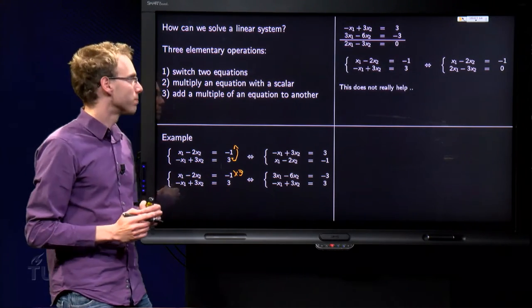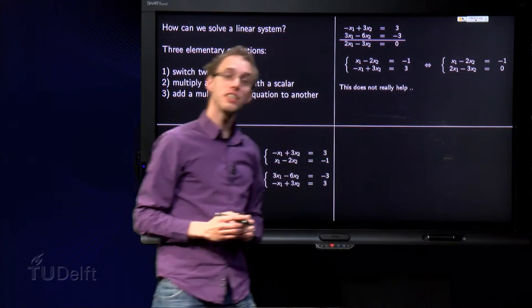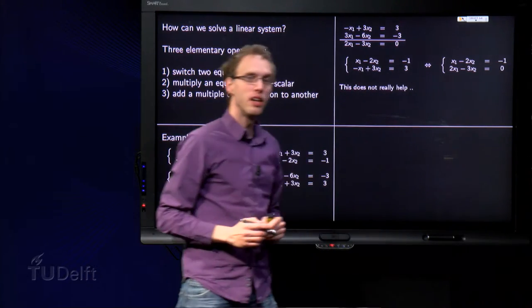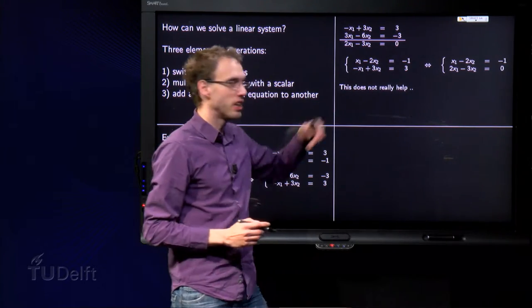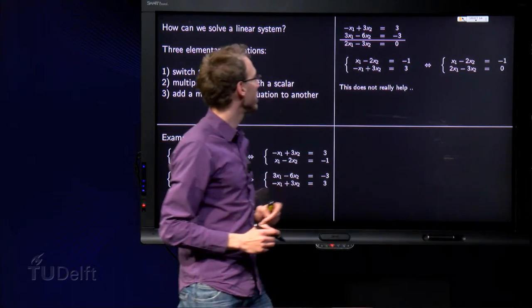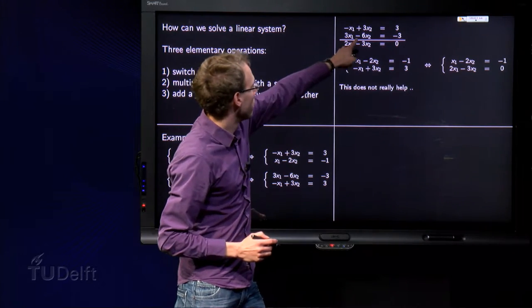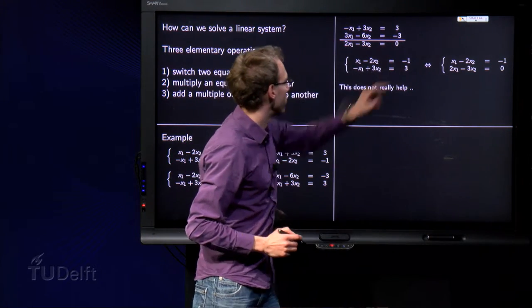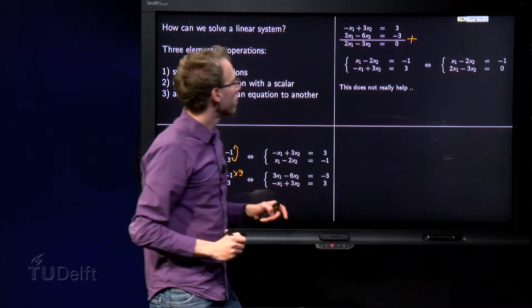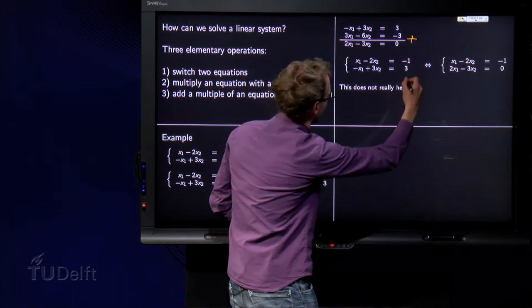Third operation: we leave the first equation as it is and replace the second equation by another equation. We replace the second equation by the second equation plus a multiple of the first equation. So we take the second equation and add three times the first equation, which yields 3x1 minus 6x2 equals minus 3. We add those up and get 2x1 minus 3x2 equals 0.